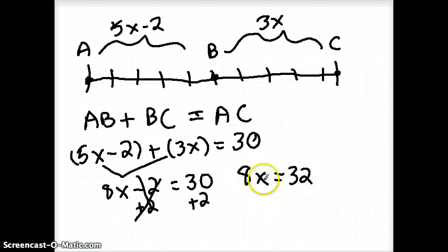And this is 8 times a number equals 32. Well, in order to figure out what this number is I do the opposite of multiplying, I divide by 8, and that cancels to 1. 1x, which is what I want. 32 divided by 8 is 4. So I get that 1x equals 4.